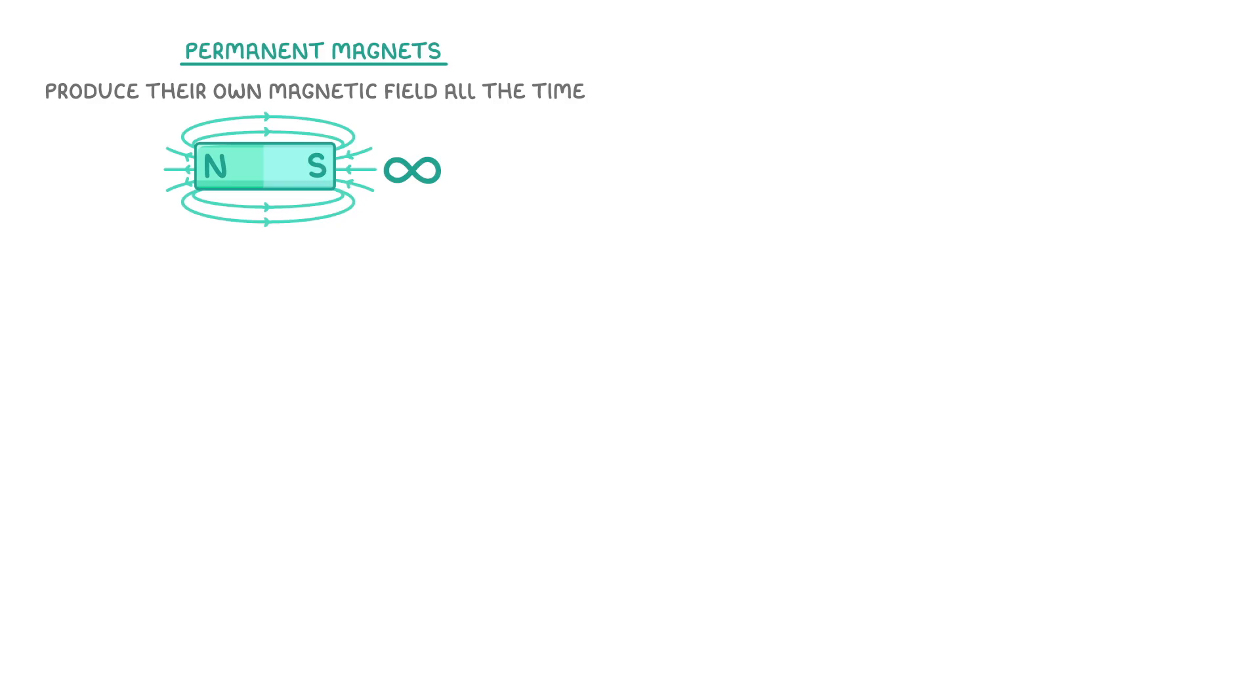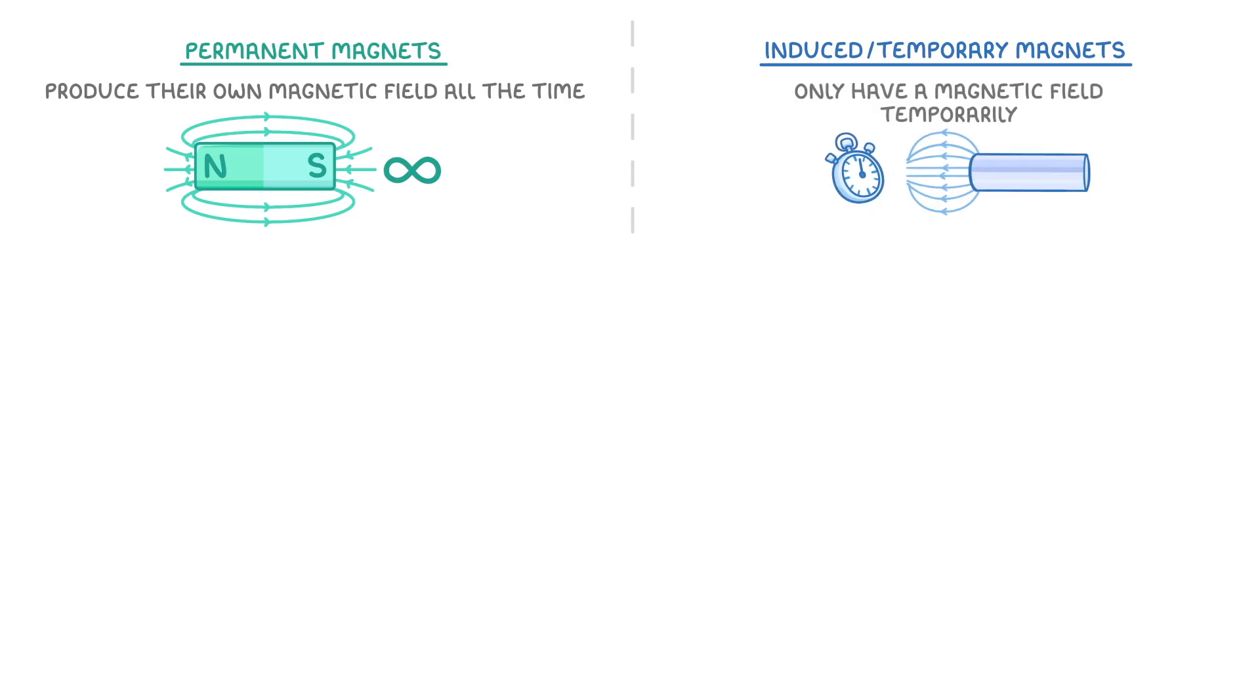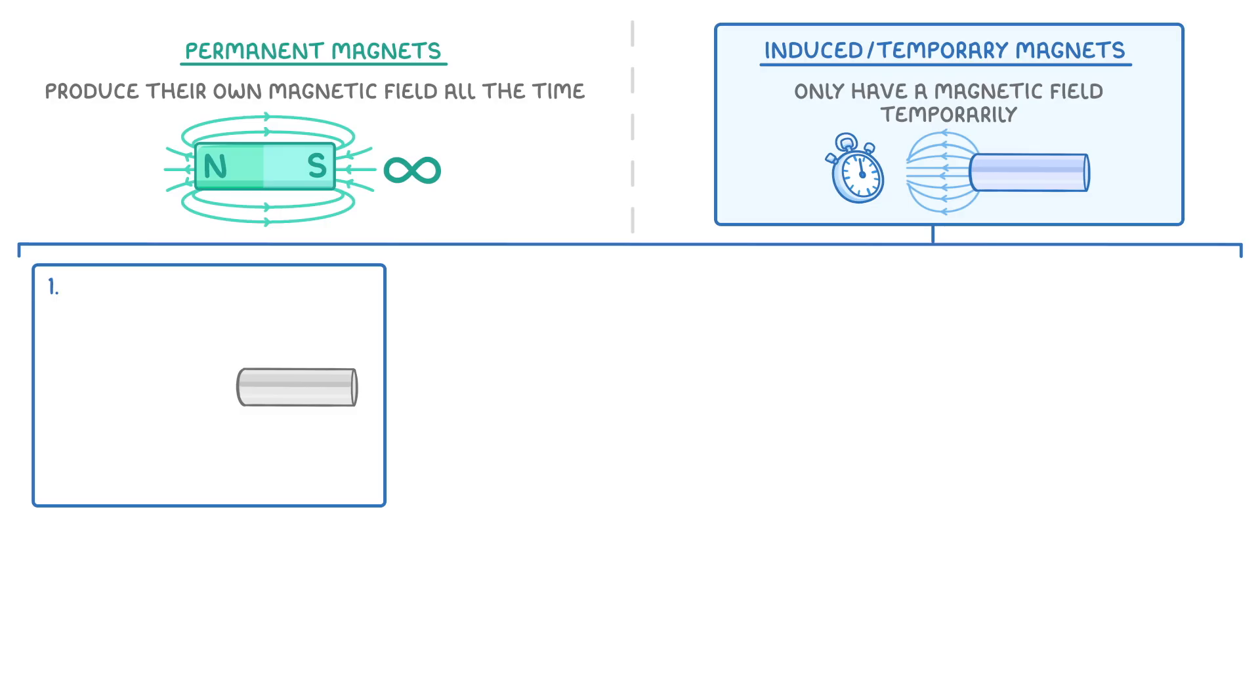There are another group of magnets though, which we call induced or temporary magnets, which only have a magnetic field temporarily. These are made when a piece of magnetic material, which wasn't actually a magnet, like your average piece of nickel, is put into the field of a permanent magnet.